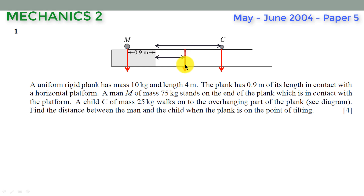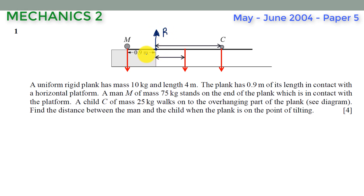The diagram shows the center of mass of the plank, with an arrow indicating the weight of the plank. Another arrow shows the weight of the man, and a further arrow shows the weight of the child. We also draw an arrow pointing vertically upwards at the pivot point — this is the normal component of the contact force R. There are four forces acting on this plank.